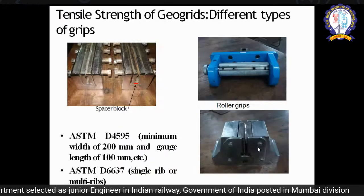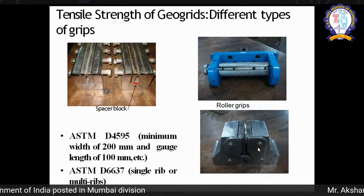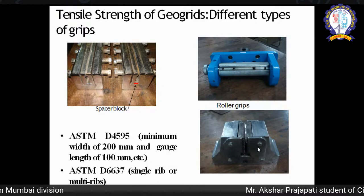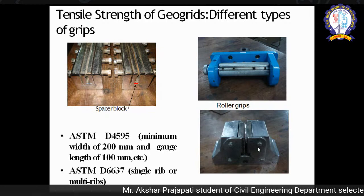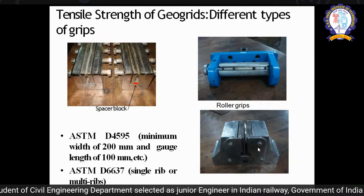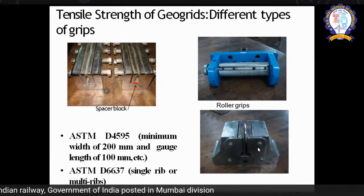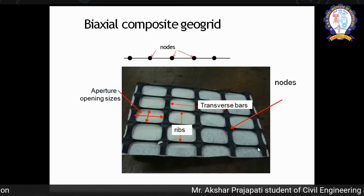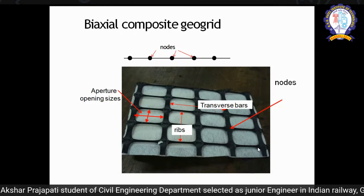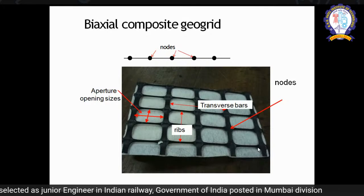This is an example of a biaxial composite geogrid. It is a composite material — along with the geogrid, a geotextile has also been used at the bottom. The transverse members are called traverse bars, the longitudinal bars are called ribs, and the connection of bars and ribs is called a node. The opening is called an aperture. You can change the opening size depending on your application.